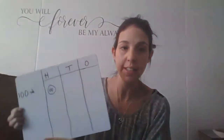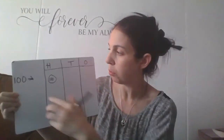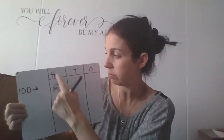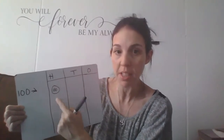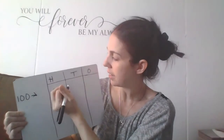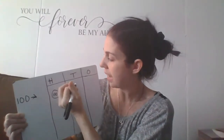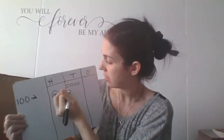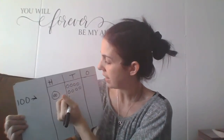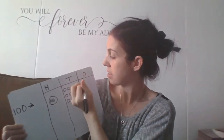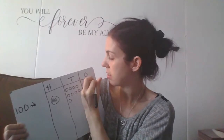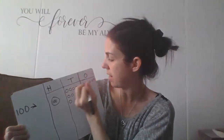Before we do that, we're going to look at this right here. So 100 can be shown like this — 1 in the hundreds place. 100 can also be shown as 9 tens, and 10 ones.